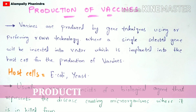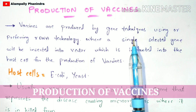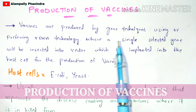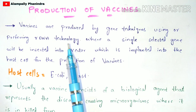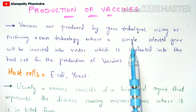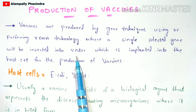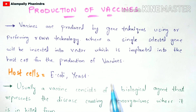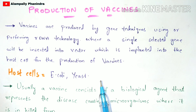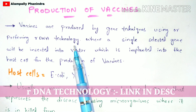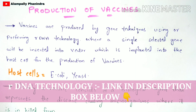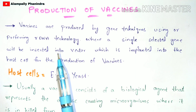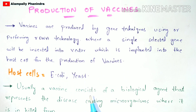In this video, let us discuss about production of vaccines. Vaccines are produced by gene techniques using rDNA technology, where a single selected gene will be inserted into the vector and that particular vector will be implanted into the host cell for the production of the vaccines. Before entering into this topic, I recommend you to watch my previous video on rDNA technology, where a brief introduction and explanation has been given.